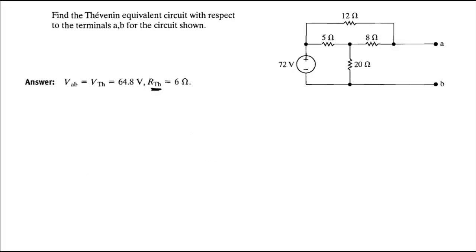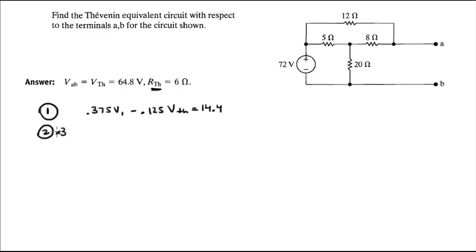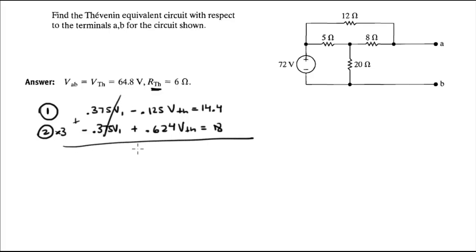Writing both equations: Equation 1 is 0.375·V1 − 0.125·V2 = 14.4. Multiplying Equation 2 by 3 gives −0.375·V1 + 0.624·V2 = 18. Adding the two equations, V1 cancels out, leaving 0.499·V2 = 32.4, so V2 = 64.9 volts.